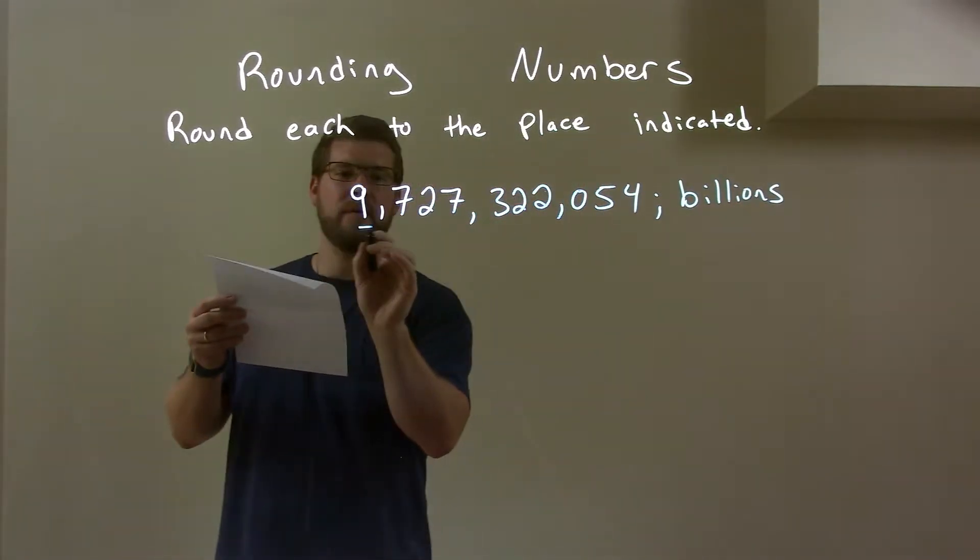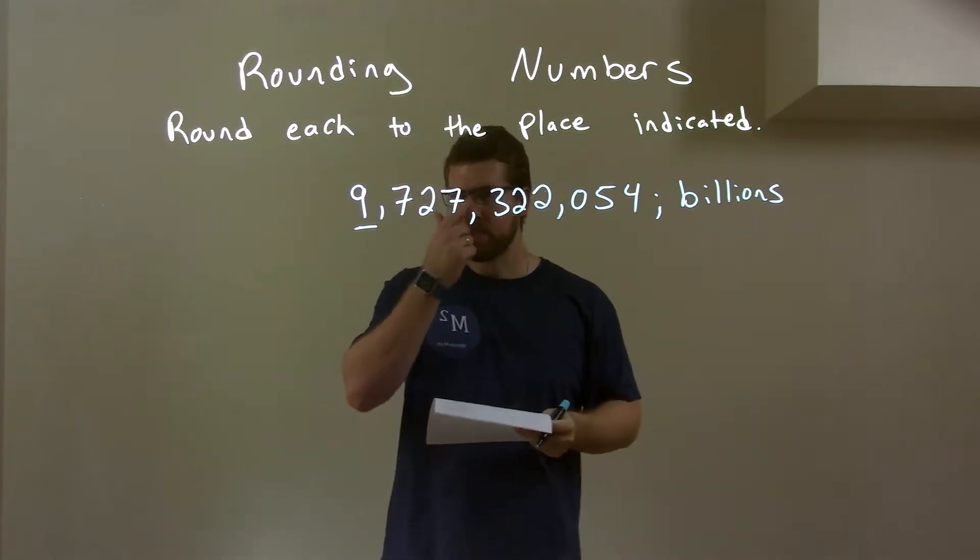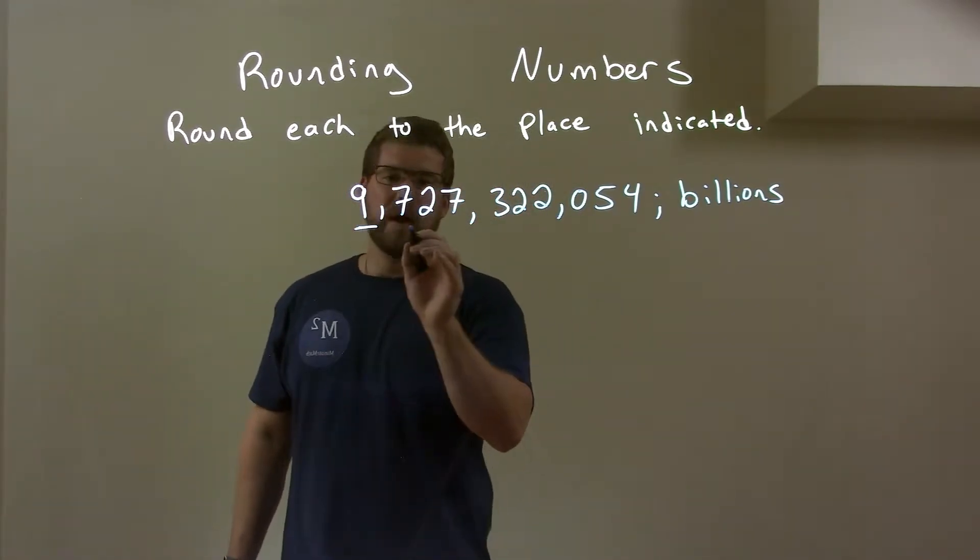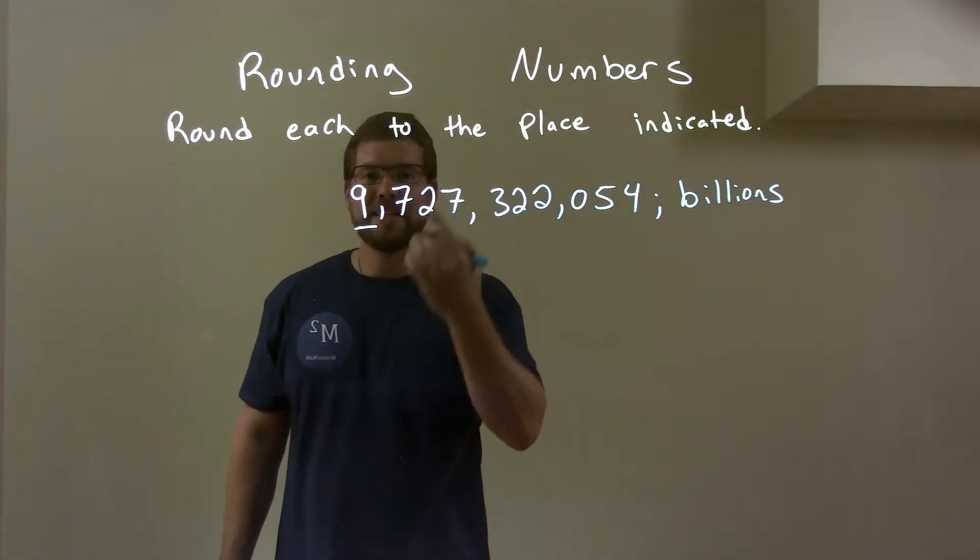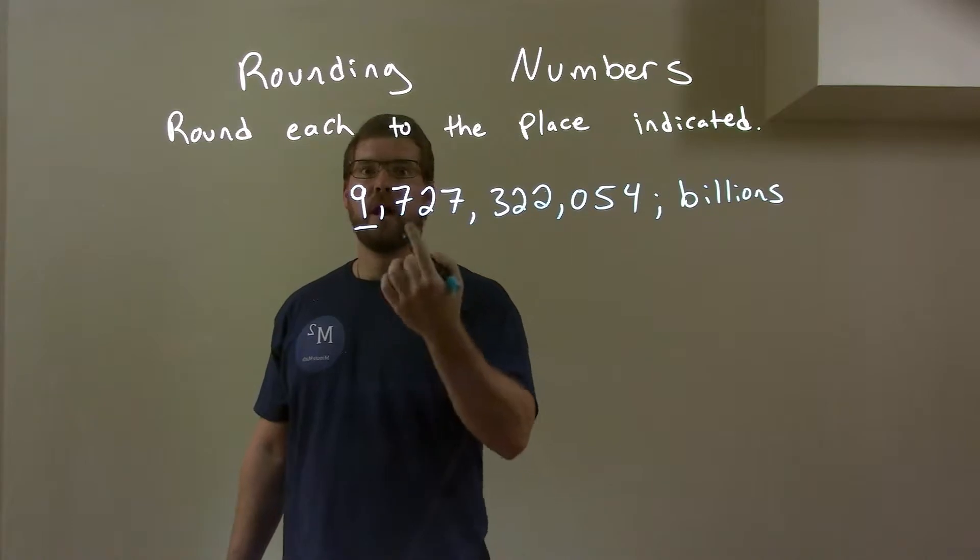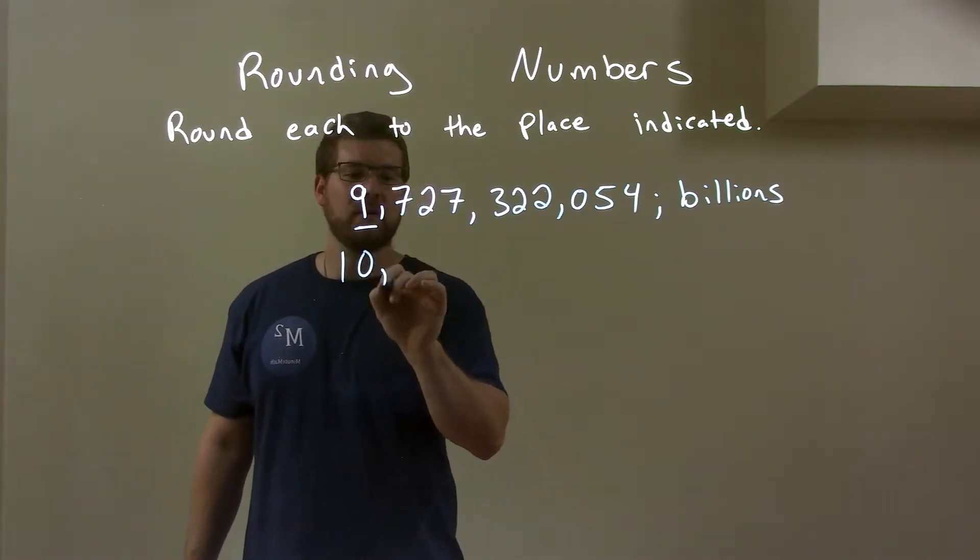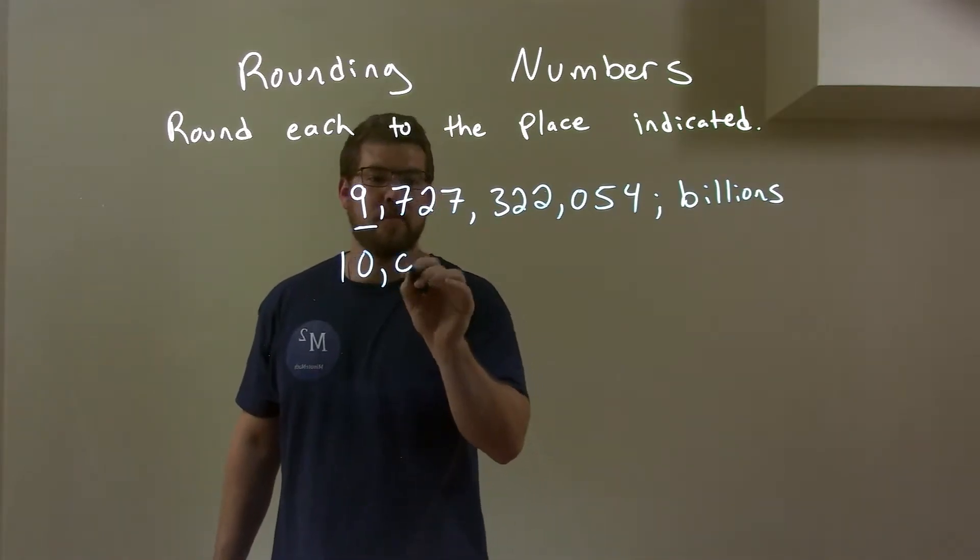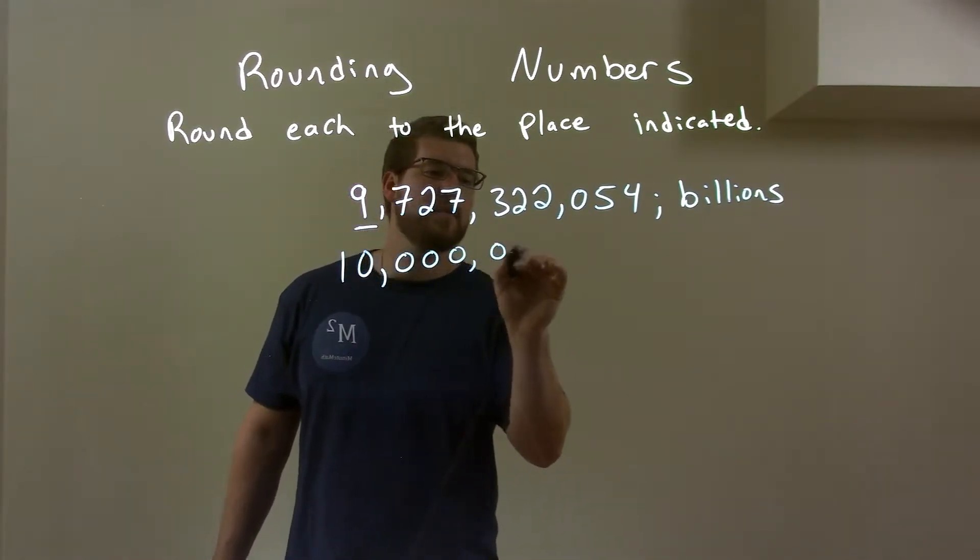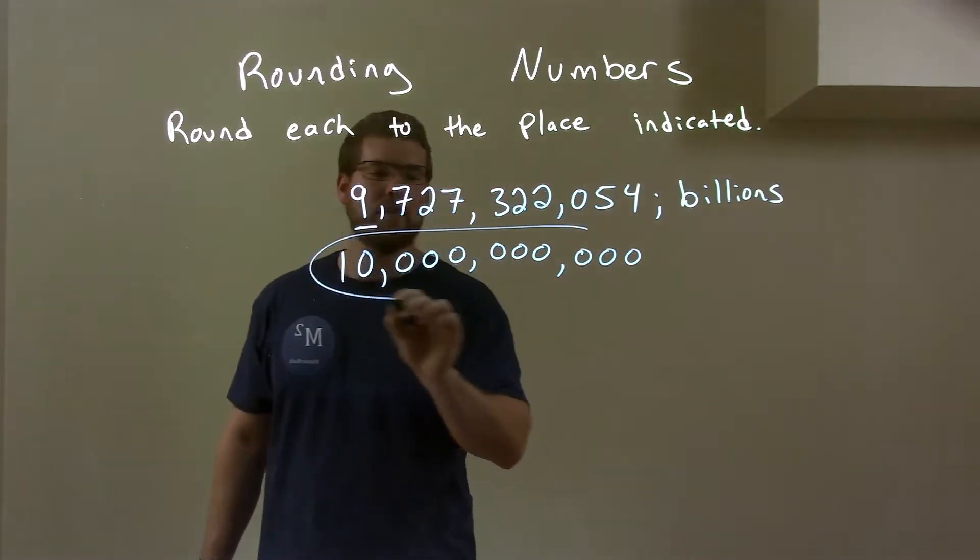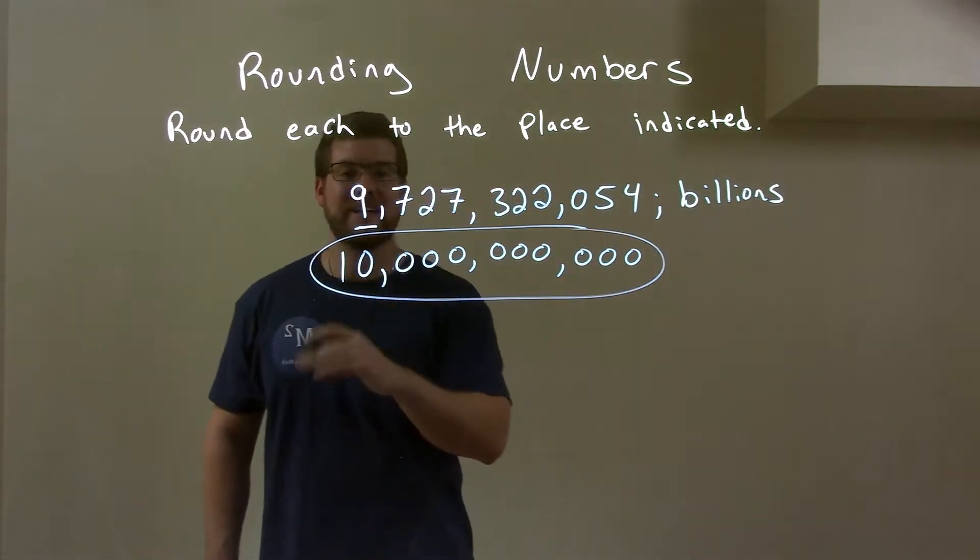So the billions place is right here at this 9. Okay? It's our billions place. So I look to the right of the 9 and I see a 7. That 7 is between 5 and 9, causing the 9, this 9, to round up. 1 plus 9 is 10. So we have 10 here and the rest of these numbers get replaced with zeros at this point. And so here we have our final answer of just 10 billion.